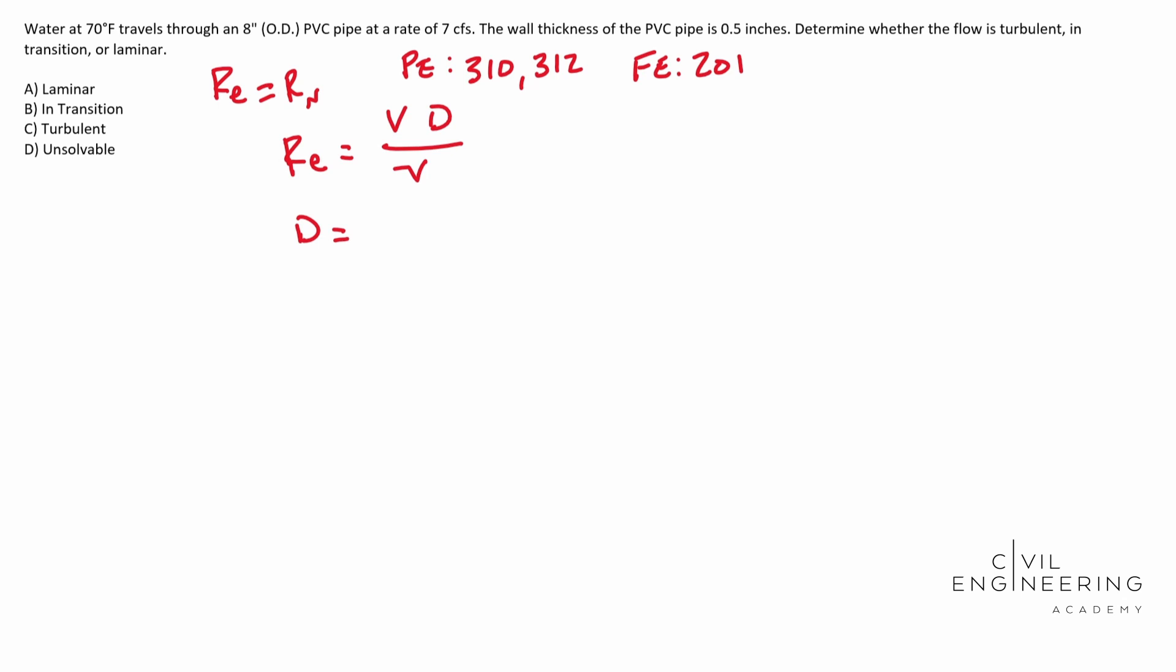Our diameter, this is our inside diameter. Well we're given our outside diameter and the pipe thickness. So our inside diameter is this outside diameter 8 inches minus two times our wall thickness.